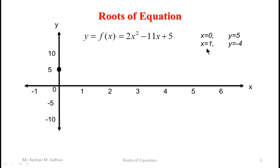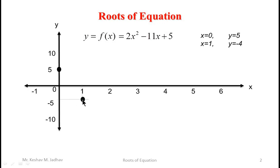Now let us consider x is equal to 1. So if you put x equal to 1 in this equation then we get 2 into 1 squared minus 11 into 1 plus 5, so we will get y is equal to minus 4. So for x equal to 1 we get y equal to minus 4, and we can locate that point here.